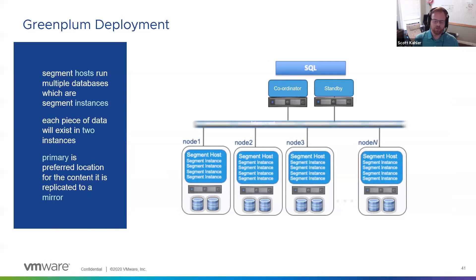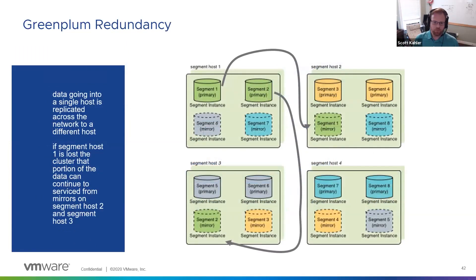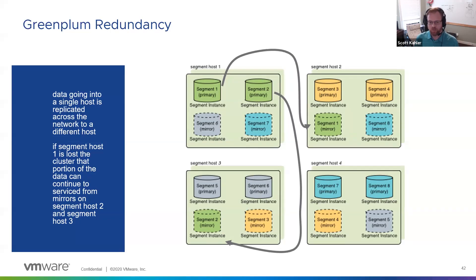When you deploy Greenplum, normally you're going to have hosts with multiple Postgres instances on them. Of these multiple Postgres instances, you'll have a primary on one system and then a mirror of that on another system, so your piece of data will end up in two places. In a simple Greenplum deployment, you might have two primaries and two mirrors per host. Greenplum hashes the data across the different primaries — for example, the number one may hash and go into segment one, and be replicated to host two in the mirror for segment one.